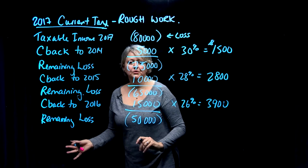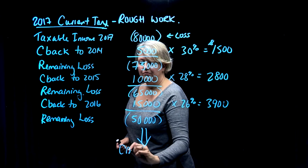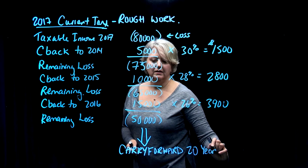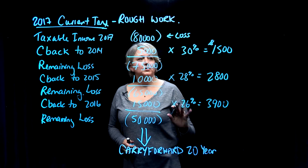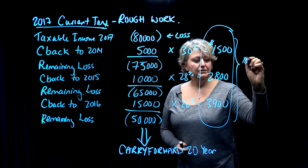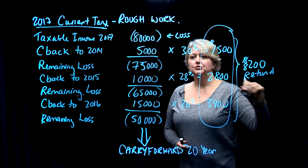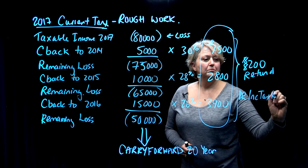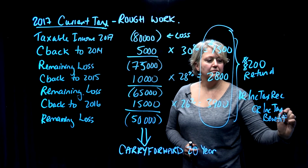We can't carry back any more years and ask for a refund. So what we can do is make note of that $50,000 and carry it forward for the next 20 years, to ask for a reduction of our taxes based on this loss. To wrap up the current tax piece, we've got these three refunds that add up to $8,200 in refund. So we'll do a journal entry: debit income tax recoverable and credit income tax benefit for $8,200.